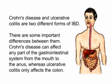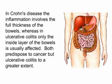Crohn's disease can affect any part of the gastrointestinal system from the mouth to the anus, whereas ulcerative colitis only affects the colon. In Crohn's disease, the inflammation involves the full thickness of the bowels, whereas in ulcerative colitis only the inside layer of the bowels is usually affected. Both predispose to cancer, but ulcerative colitis to a greater extent.